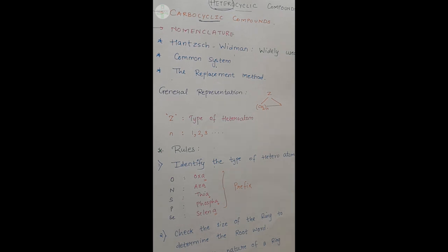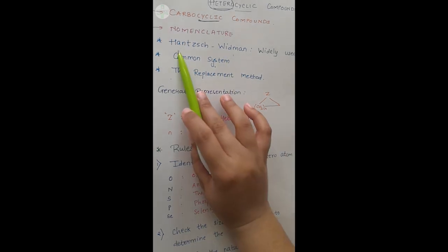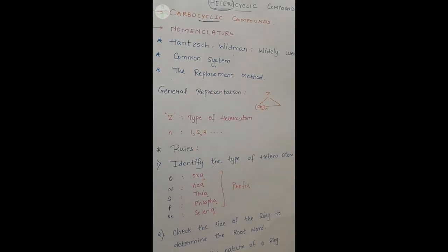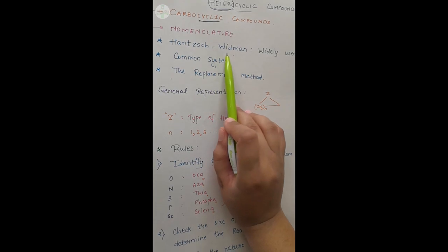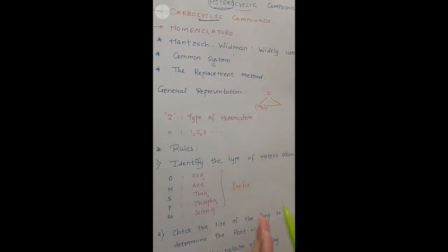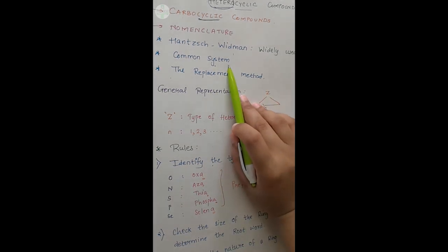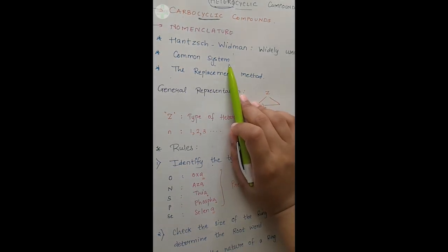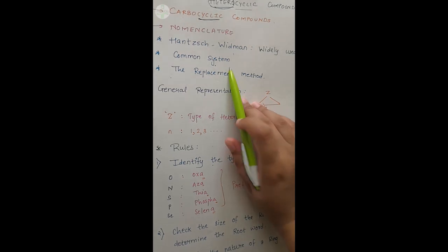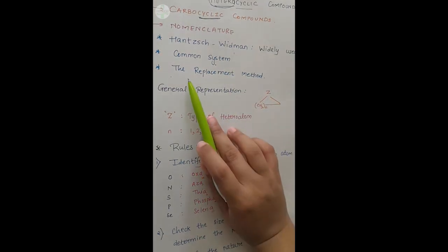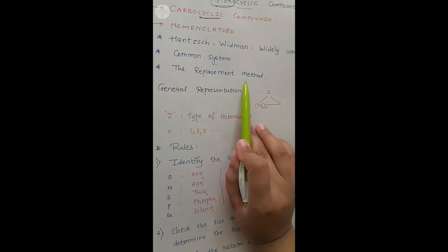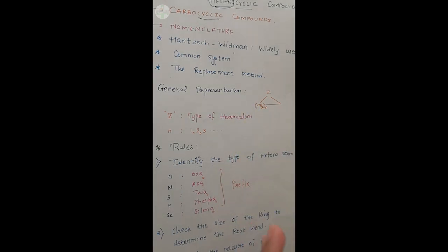Heterocyclic compounds के लिए there are three nomenclatures. सबसे पहला है Hans-Widman nomenclature. ये जो Hans-Widman nomenclature है, ये सबसे ज्यादा use किया जाता है and it is accepted also. Second is common system, यानि कि जो common names हैं जो आप already जानते हैं और हम लोग आगे discuss भी करने वाले हैं. And the third one is the replacement method, जो कि इतना ज्यादा use नहीं होता है.